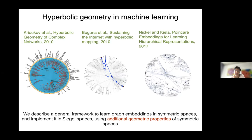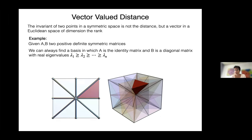The talk describes a general framework for learning graph embeddings in symmetric spaces, applied specifically to Siegel spaces and SPD matrices. In Euclidean or hyperbolic space the relative position of two points is determined by a single distance number, but in a symmetric space this is finer.